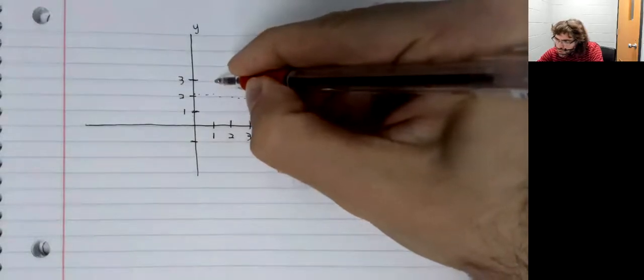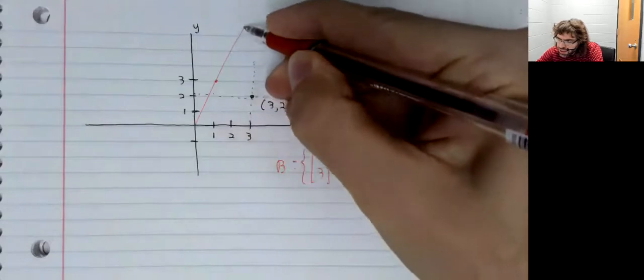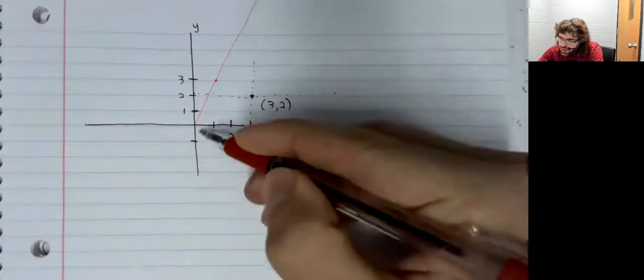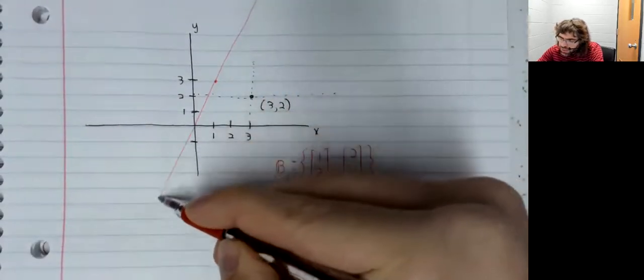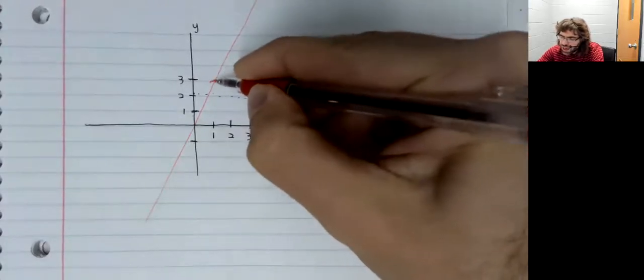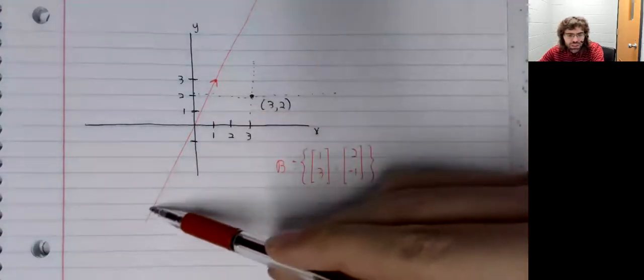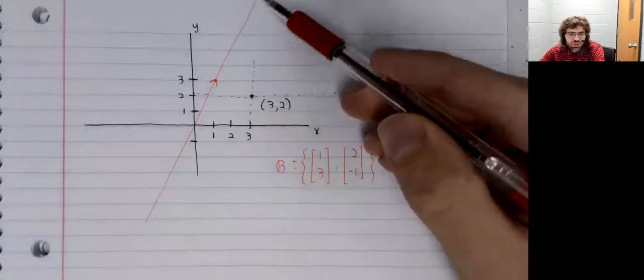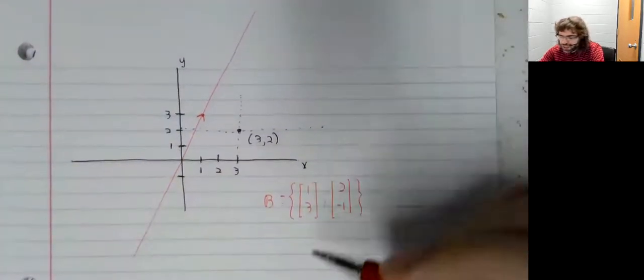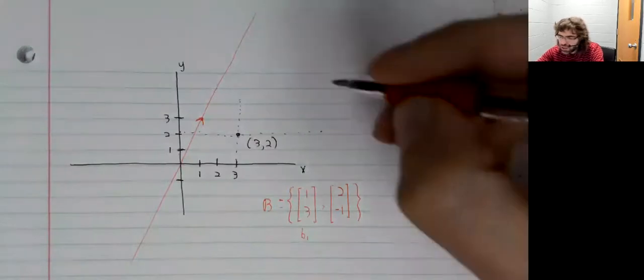Well, the vector [1, 3] can be used to define a line. Here's the vector [1, 3]. We use that to create a line. And if we call this vector b1, this line is the b1 axis.